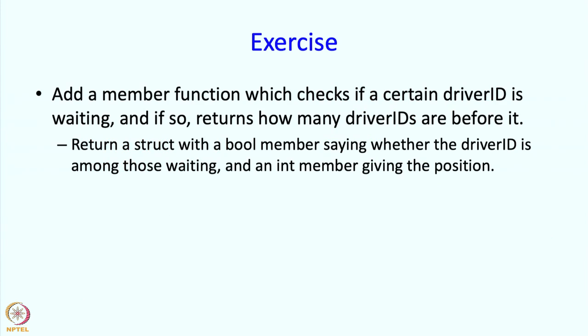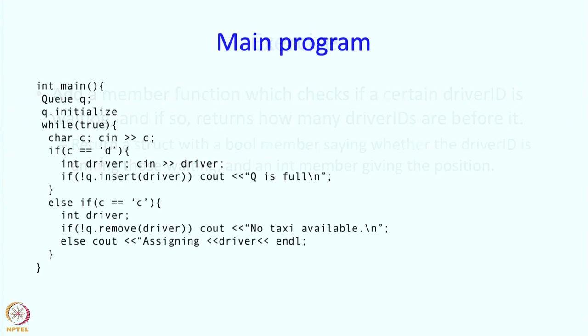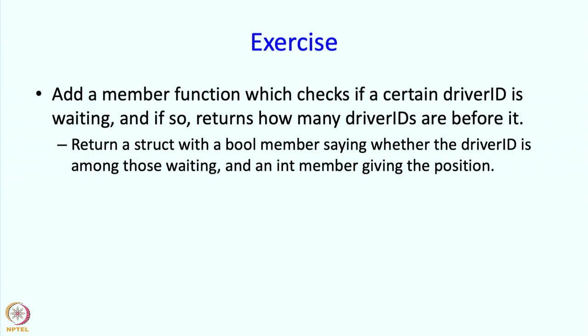As you can see, we can easily write taxi dispatch in terms of member functions, and we are not really looking at the details of the queue. Our concerns have been nicely separated. The member functions worry about the details of the queue, and the user program just calls the right functions. This exercise is about adding one more operation, so you should certainly attempt it.